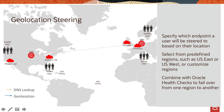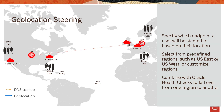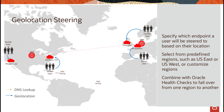European customers may be served a different language, and your North American customers should go to a different site because of a different application running on it. Using geolocation steering, you can ensure that users coming from a specific region are directed to workloads in that specific region. You can again combine health checks for failover — if one region fails, traffic can fail over to another region.